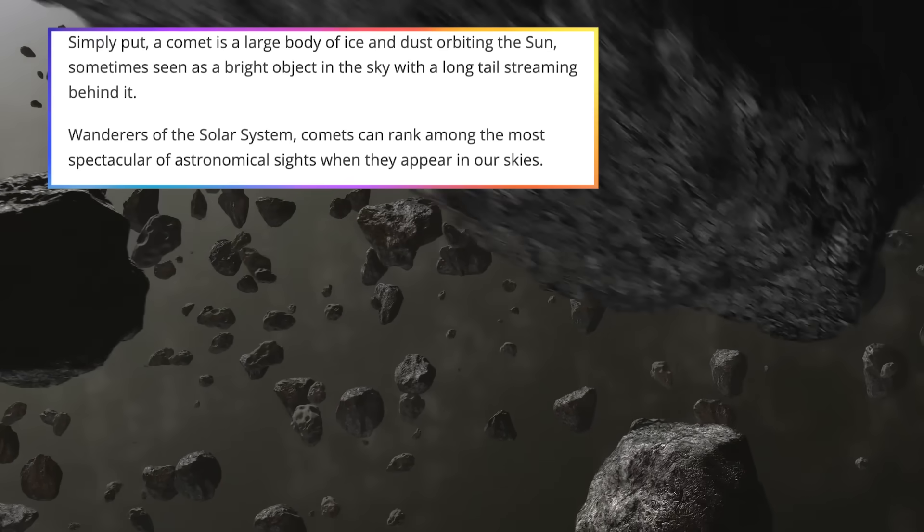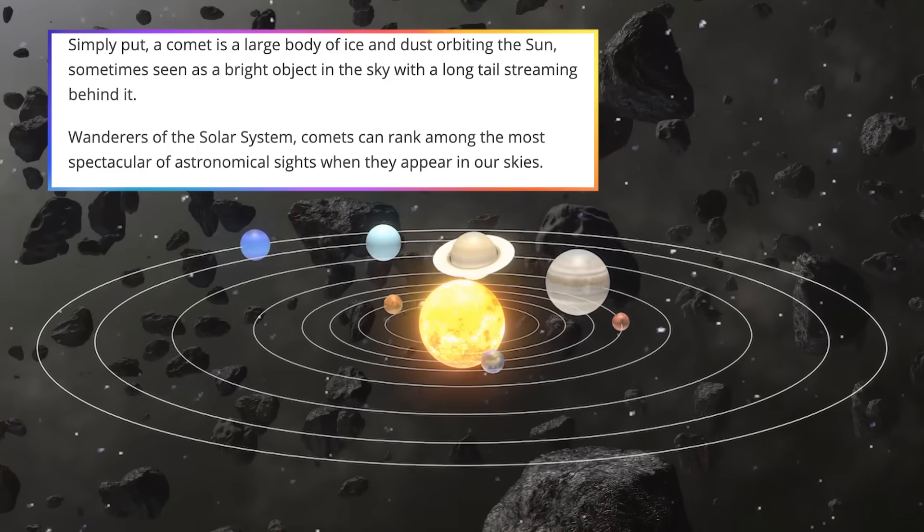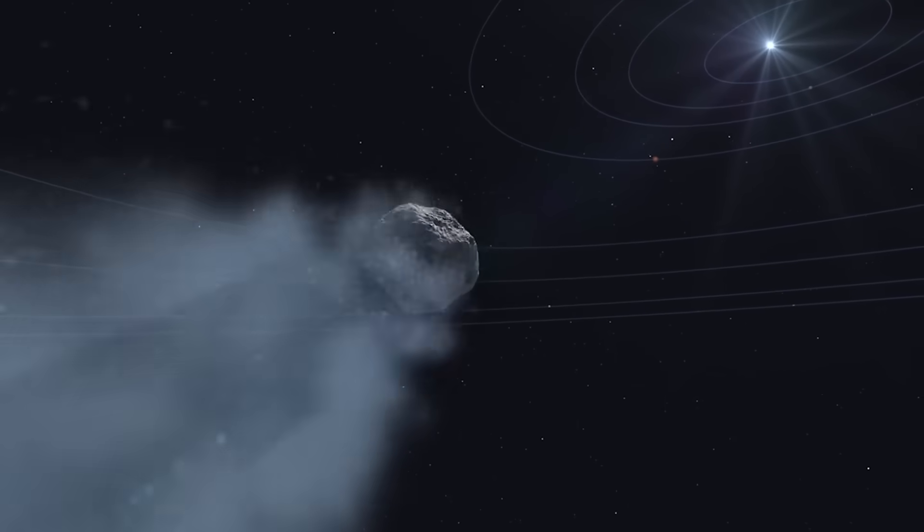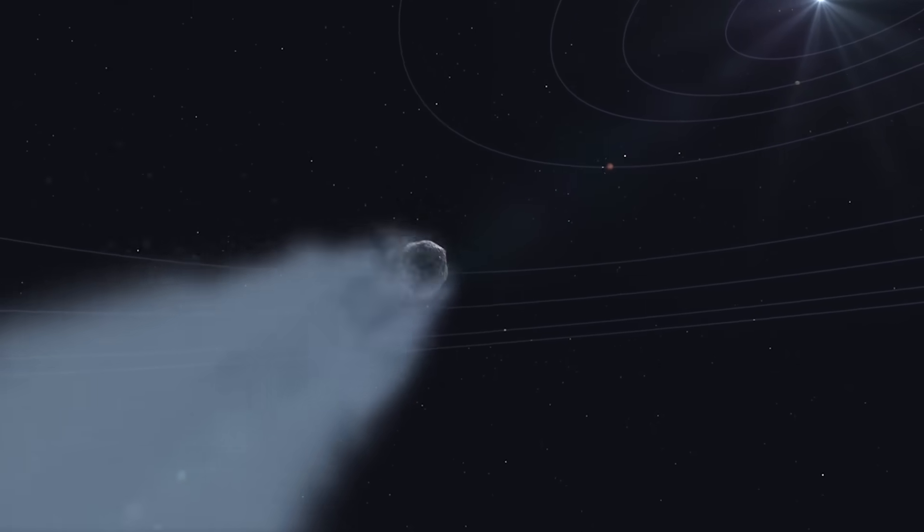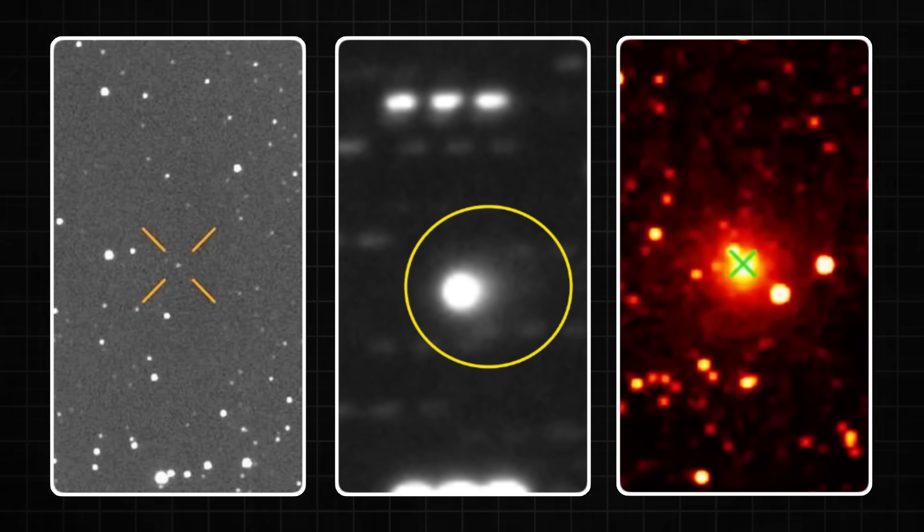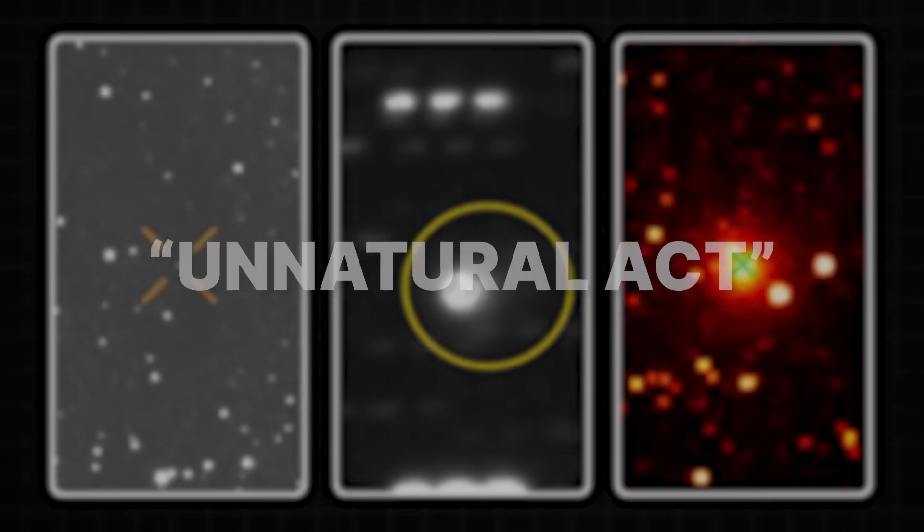Comets are ancient relics, icy leftovers from the formation of our solar system. They're supposed to be passive, their behavior governed by the sun's heat. But this was different. This was a deliberate, powerful, and some might say an unnatural act.